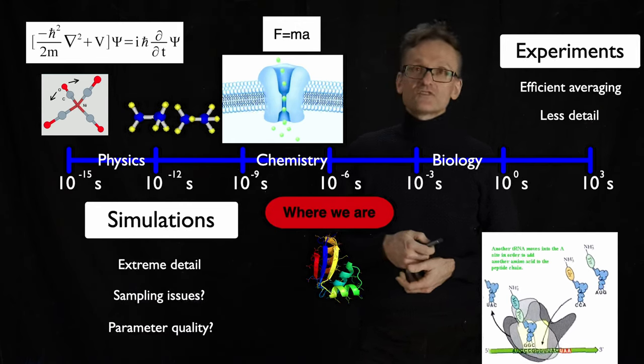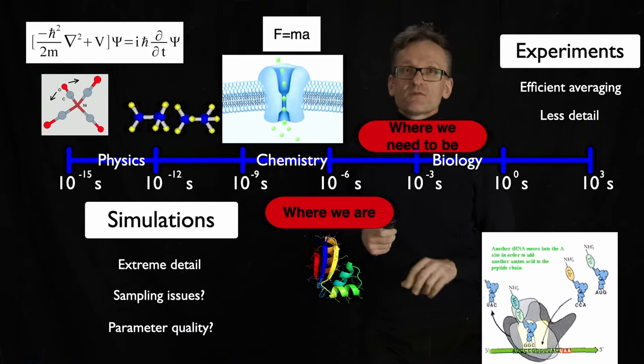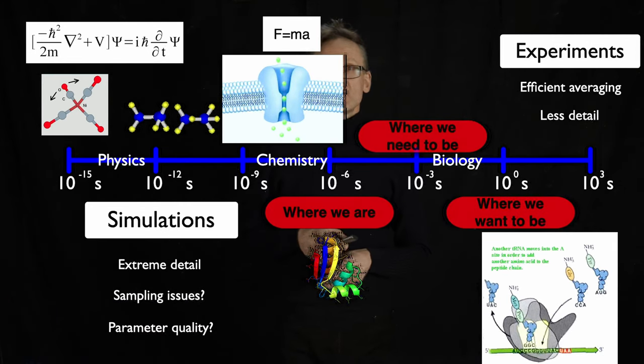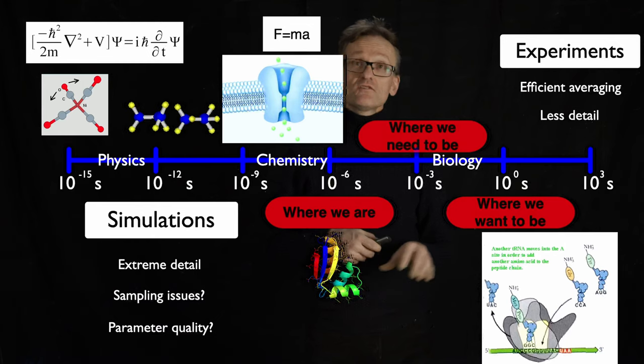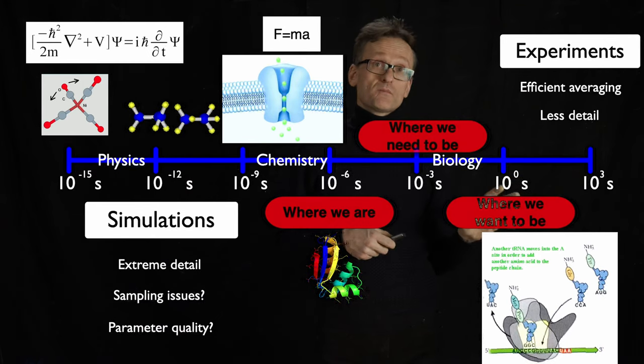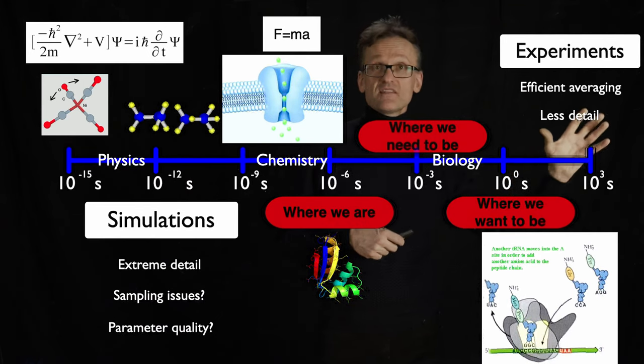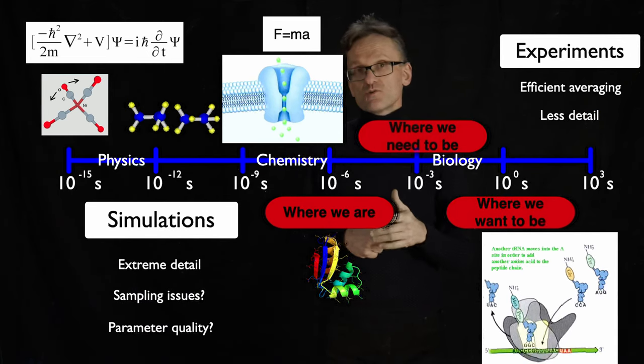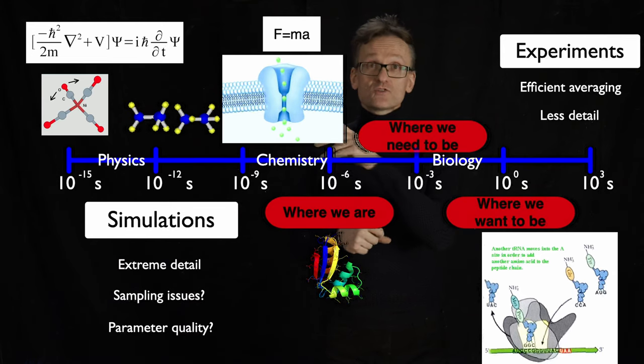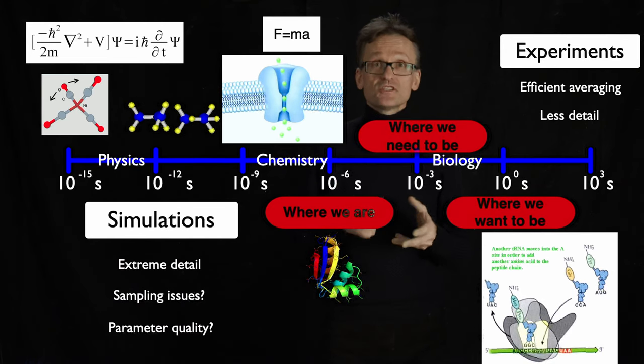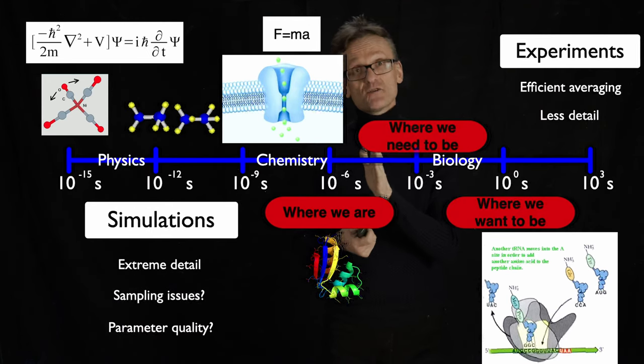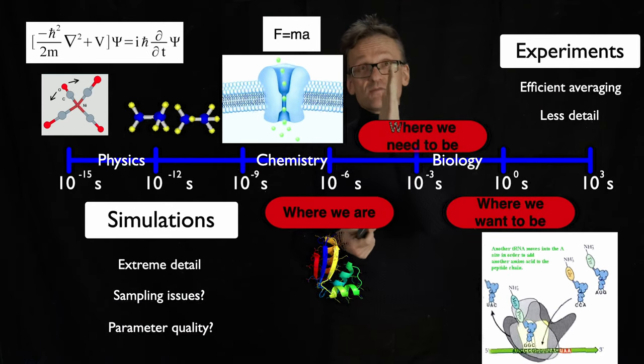And I think both Vijay and I used to say that at the time we were kind of at microseconds. We would like to be at milliseconds and we would love to be at seconds. I don't think we need to be at seconds, because what's happened at the same time is that the experiments have gotten better and better at resolving very fast phenomena. So today we can measure currents through ion channels with electrophysiology in the lab with the time resolution that's occasionally down to at least 100 microseconds or something.